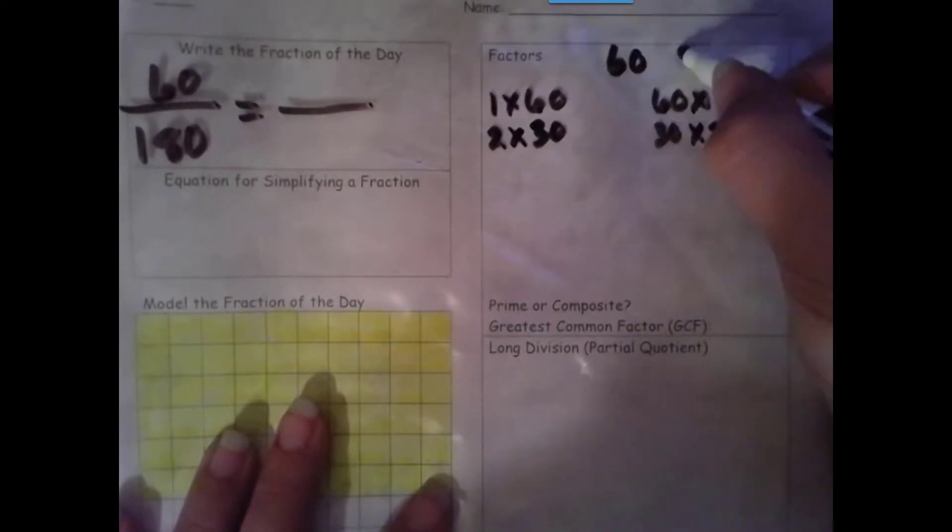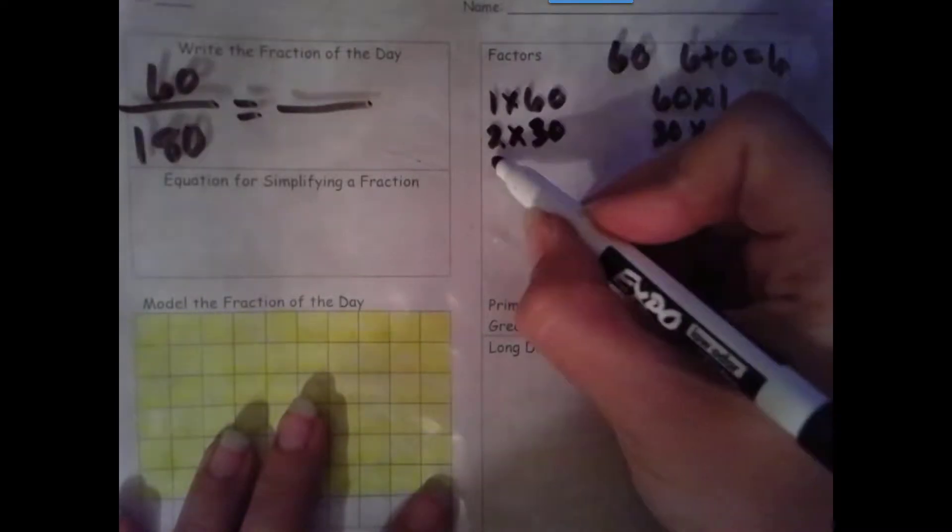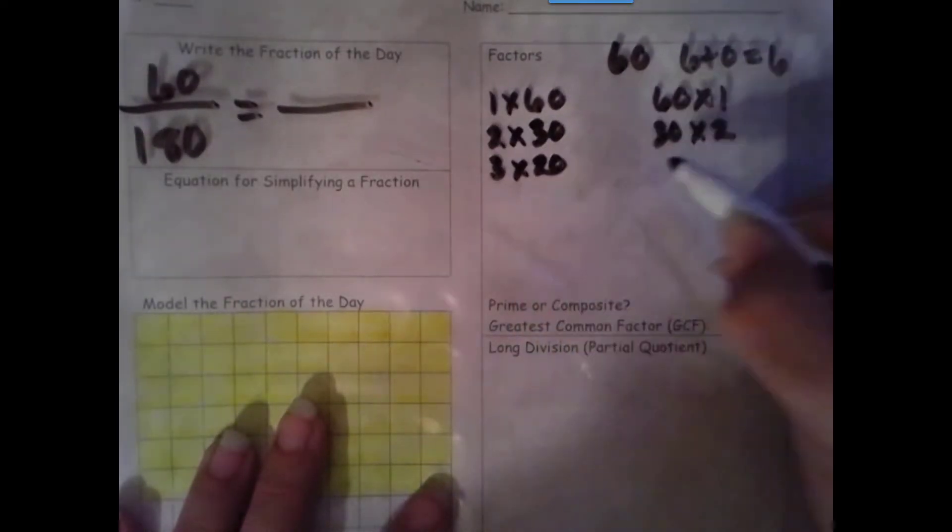The rule for 3 is that we add the digits together. 6 plus 0 is 6. 6 is a multiple of 3, so 3 is a factor. 3 times 20, 20 times 3.